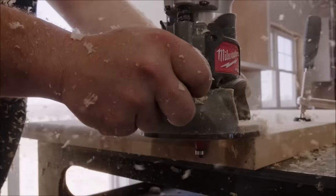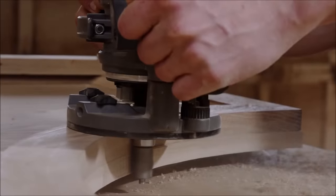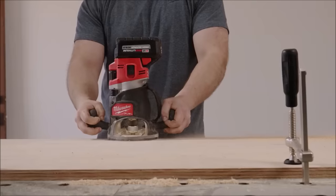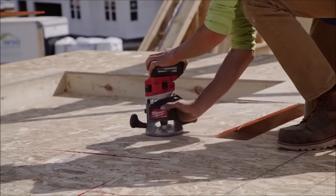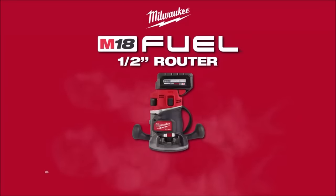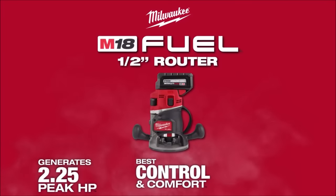Featuring a variable speed dial, micro-adjust knob, and macro-adjust button, this router allows fast, accurate depth adjustments, while dual LED lights, spindle lock, and a modular console design elevate the user experience. Compatibility with the Milwaukee half-inch router plunge base adds versatility to this powerhouse tool.